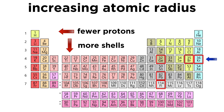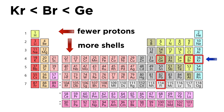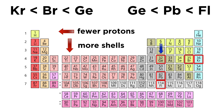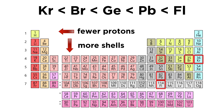Atomic radius increases going left and down. Starting at krypton and going to the left, krypton must be smaller than bromine, and bromine must be smaller than germanium. Separately, going down the group, germanium must be smaller than lead, and lead must be smaller than flerovium. Combining these two trends, the correct order in increasing atomic radius is: krypton, bromine, germanium, lead, flerovium.